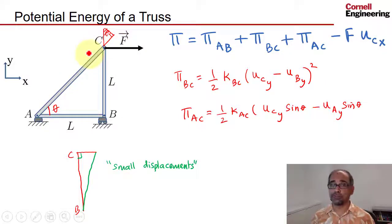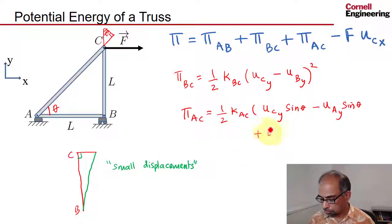But then if pin C moves in the horizontal direction, that's going to have a component along AC, and so that's also going to affect the potential energy. You have to also account for the motion of pin C in the x direction, and that's going to be the cosine theta component.